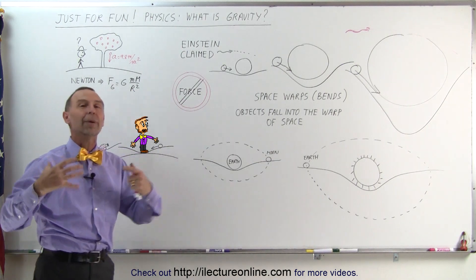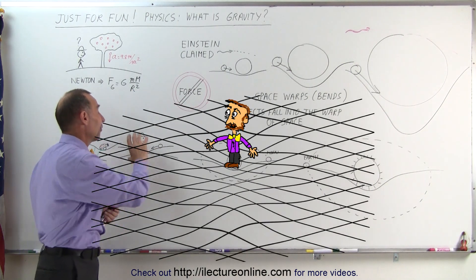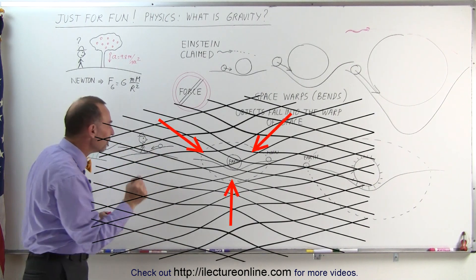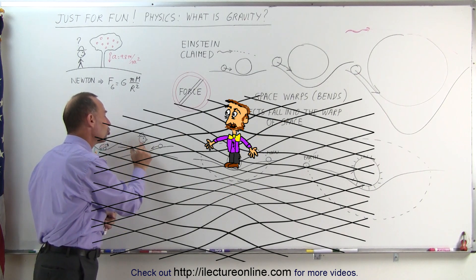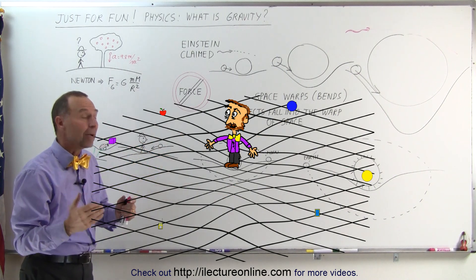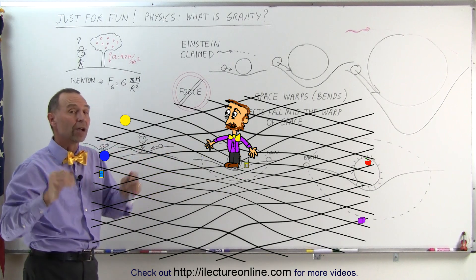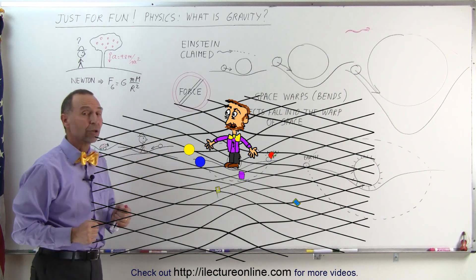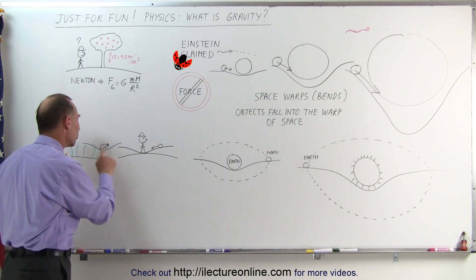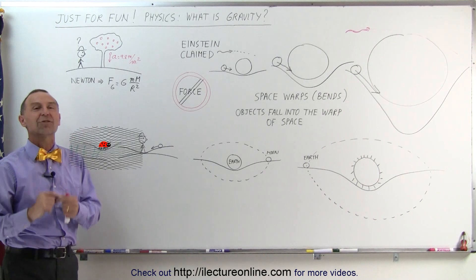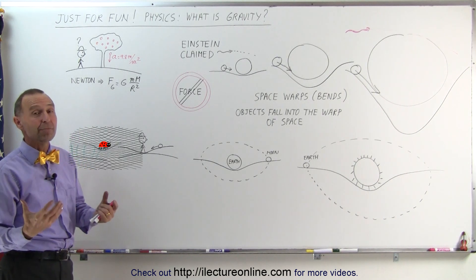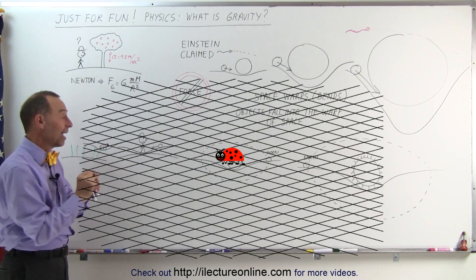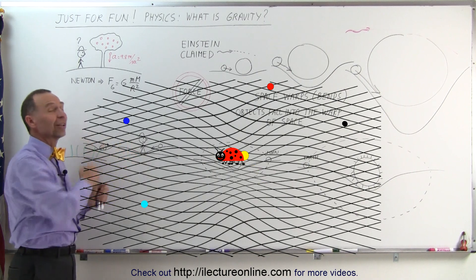Even our bodies cause a warp in space. Our bodies are very small, and the warp in space is barely noticeable, but it is there. With very fine instruments, you should be able to measure the change in a nearby object because of the apparent attraction — the apparent force of gravity — which in essence is simply a warp in space around your body. Even small objects, as small as a ladybug, do affect space to such a minute extent that it cannot really be measured, but we know that ladybugs as well cause a small bending in space.